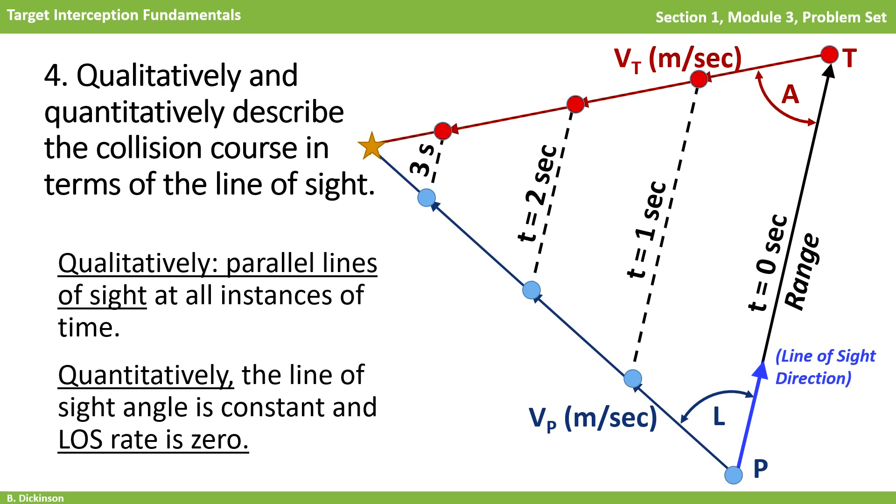If they're parallel, then their orientation does not change. Therefore, the line of sight rate quantitatively is zero. But zero with respect to what frame of reference? We have a couple obvious choices. The pursuer velocity vector, since velocity is assumed constant here, or an inertial reference frame. Here, we'll reference the line of sight to the inertial coordinate system, anticipating that in the future, we would have a maneuvering pursuer.